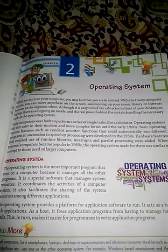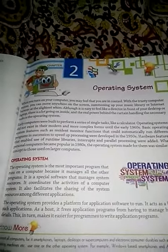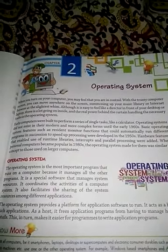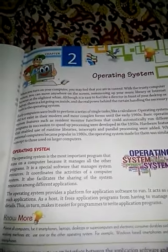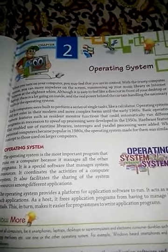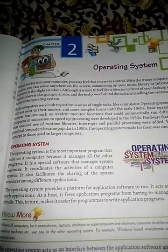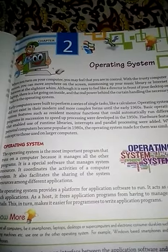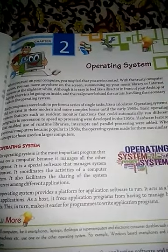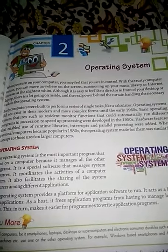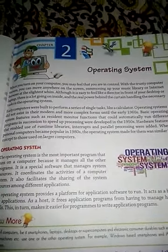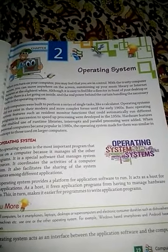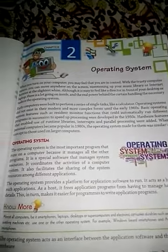Operating System: The operating system is the most important program that runs on a computer, because it manages all the other programs. It is a special software that manages system resources. It coordinates the activities of a computer system. It also facilitates the sharing of system resources among different applications. The operating system provides a platform for application software to run, and acts as a host for such applications.